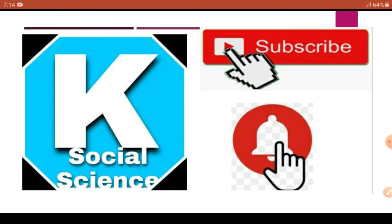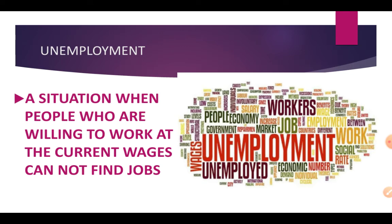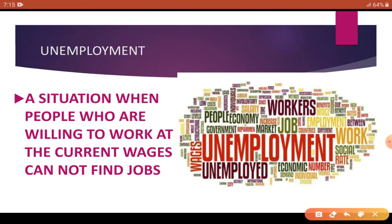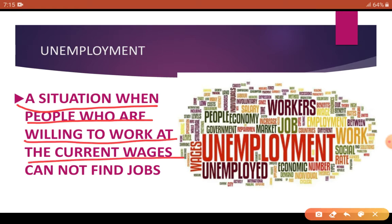Now you must be wondering why I am talking about population and unemployment — because this is the topic of today's worksheet, so let's get started. First of all we should know the meaning of unemployment. Unemployment is a situation when people who are willing to work at the current wages cannot find jobs. It is a situation where people are ready to work according to today's wages but they are not getting work, not getting a job — that is what we call unemployment.